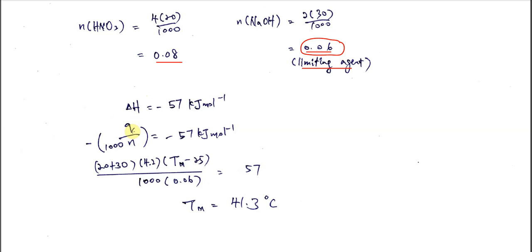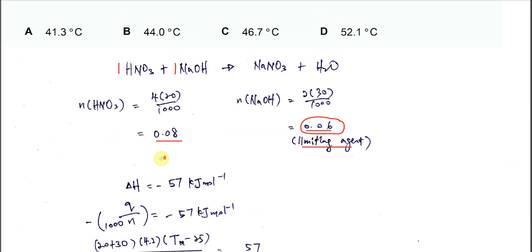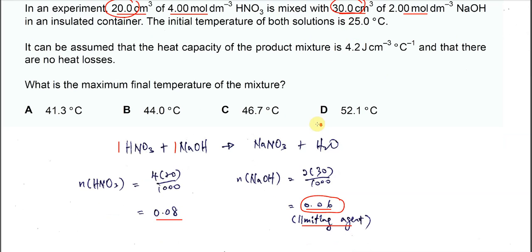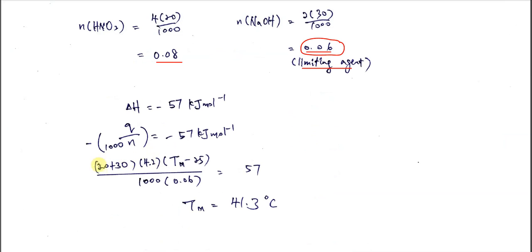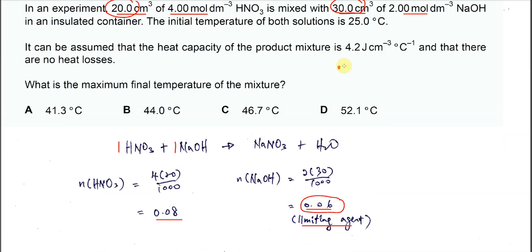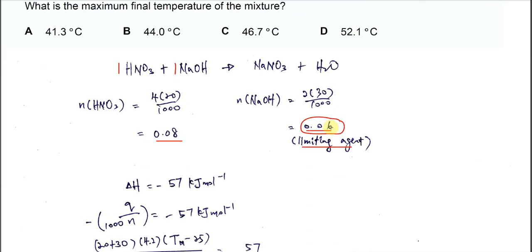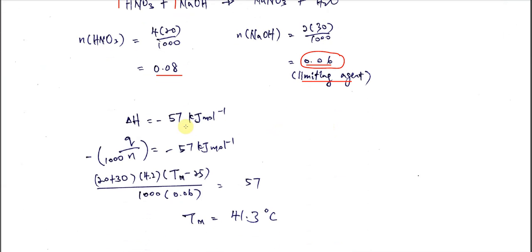Okay, Q we can calculate using MC delta T. So the M is the volume of the mixture because 20 cm³ plus 30 cm³, total volume is 50 cm³, means it's almost like 50 grams. Okay, so therefore the M here is 50, 20 plus 30 times the 4.2 because it's already given in the question. This is the specific heat capacity for the water or the mixture.